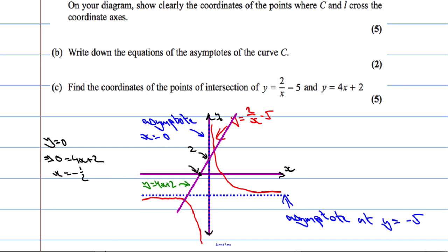We get negative 1 half. So the x-intercept is negative 1 over 2. There's one more point that we need to mark. And it's this one here. So what happens with y equals 2 over x minus 5?